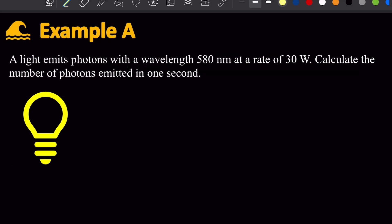Here's an example that looks at a light emitting photons. And it's emitting photons with a fixed wavelength of 580 nanometers at a rate of 30 watts. And it's asking to calculate the number of photons emitted in one second.